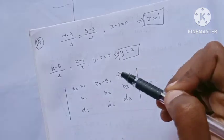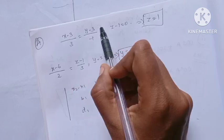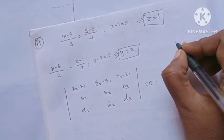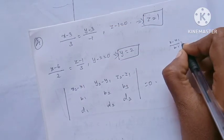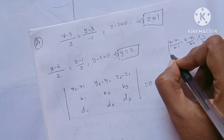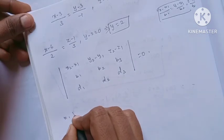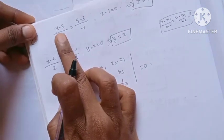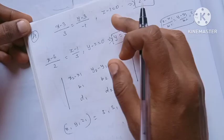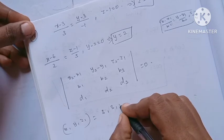Now we check x1, y1, z1 and x2, y2, z2. The general straight line form is x minus x1 by b1 equals y minus y1 by b2 equals z minus z1 by b3. For the first line, x minus 3 by 3 equals y minus 3 by minus 1 equals z minus 1 by 0. So x1 is 3, y1 is 3, z1 is 1.